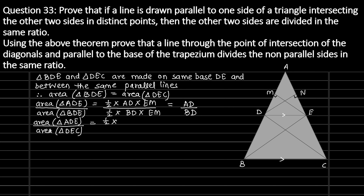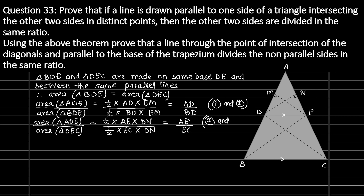Similarly, area of triangle ADE divided by area of triangle DEC equals half times AE times DN divided by half times EC times DN. Simplifying, this gives AE divided by EC. This result is derived using equations 2 and 4.